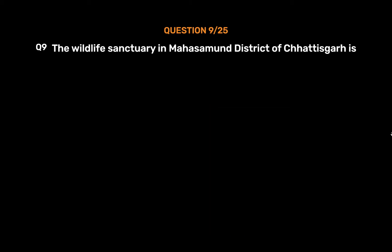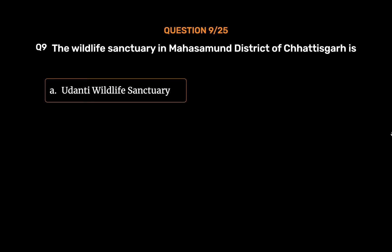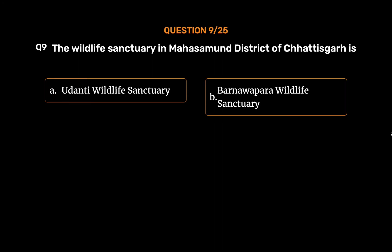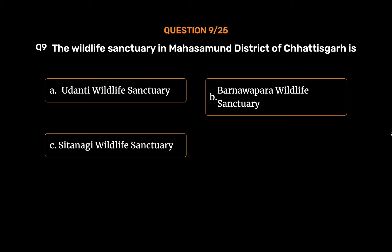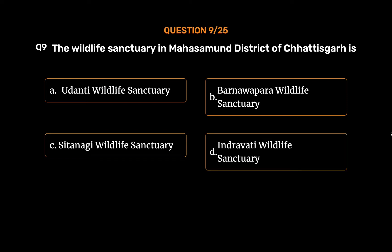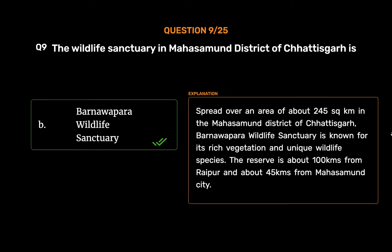Question No. 9: The wildlife sanctuary in Mahasamund district of Chhattisgarh is — Option A: Uddanti Wildlife Sanctuary. Option B: Barnawapara Wildlife Sanctuary. Option C: Sitanadi Wildlife Sanctuary. Option D: Indravati Wildlife Sanctuary. The correct answer is Option B: Barnawapara Wildlife Sanctuary. Spread over about 245 square kilometers in Mahasamund district, Barnawapara Wildlife Sanctuary is known for its rich vegetation and unique wildlife species. The reserve is about 100 km from Raipur and about 45 km from Mahasamund city.